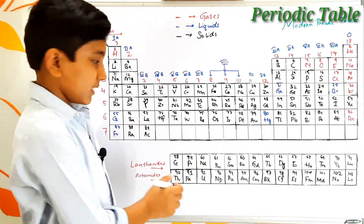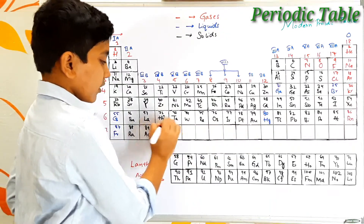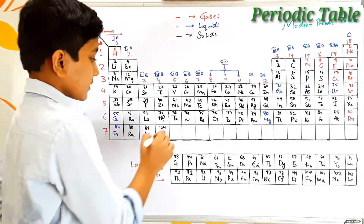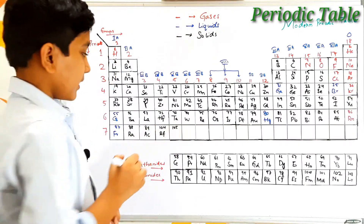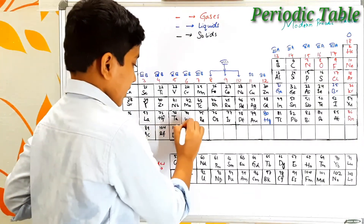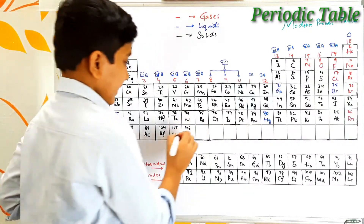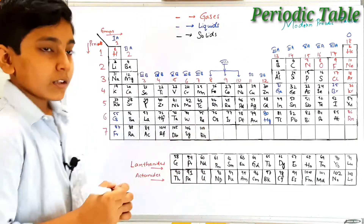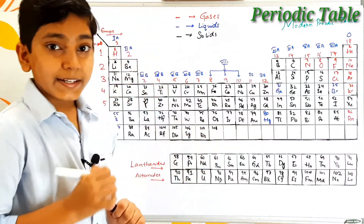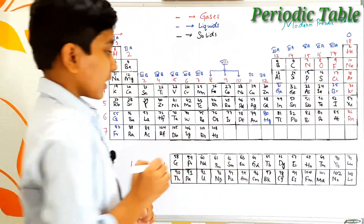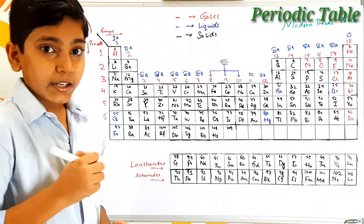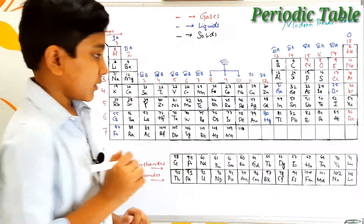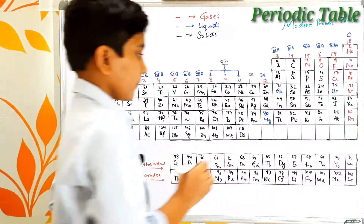Atomic number 104 is rutherfordium — its symbol is Rf, named after the famous chemist Rutherford. Atomic number 105 is dubnium — its symbol is Db. Atomic number 106 is seaborgium — its symbol is Sg. Atomic number 107 is bohrium — its symbol is Bh. Atomic number 108 is hassium — its symbol is Hs. Atomic number 109 is meitnerium — its symbol is Mt.